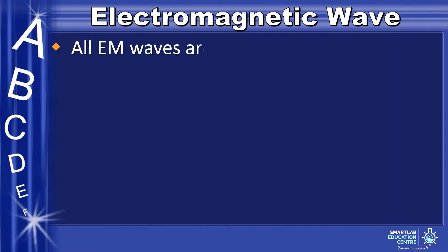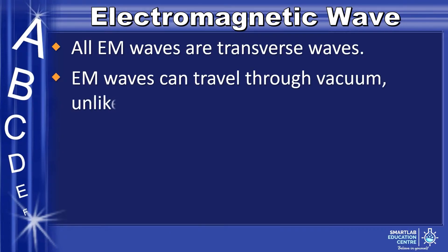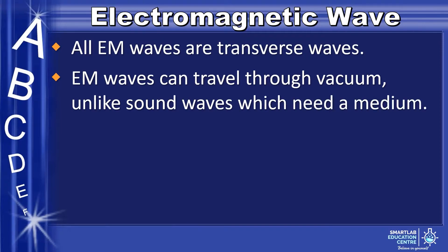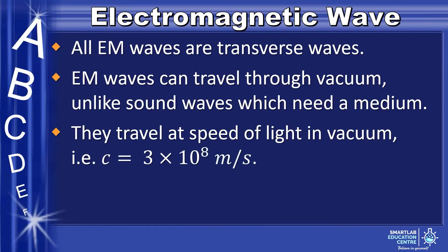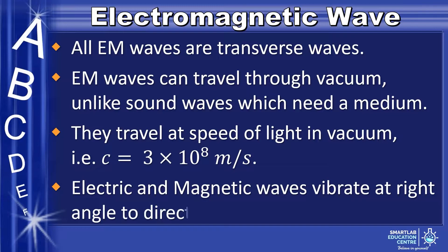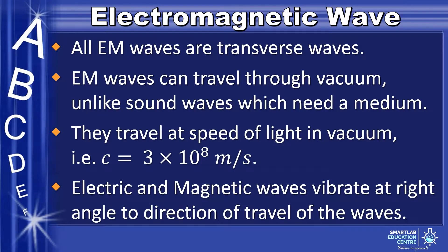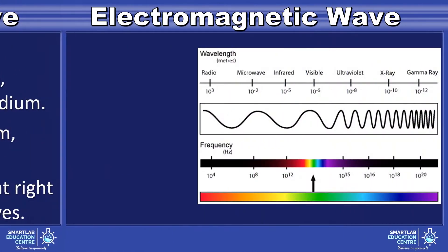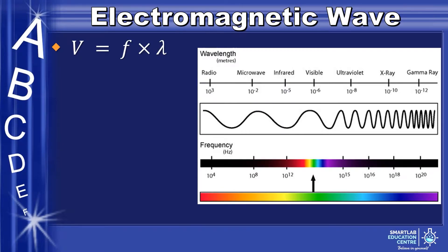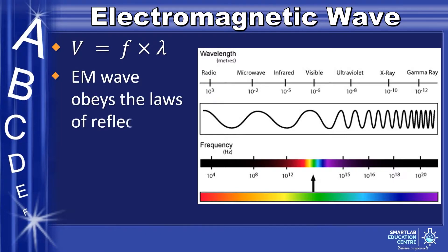All EM waves are transverse waves. EM waves can travel through vacuum, unlike sound waves which need a medium. They travel at the speed of light in vacuum, that means 300 million meters per second. Electric and magnetic waves vibrate at right angles to the direction of travel. The speed of the EM wave: V equals its frequency f times its wavelength lambda.